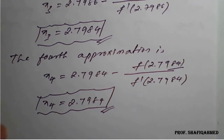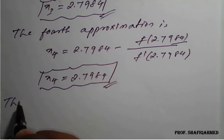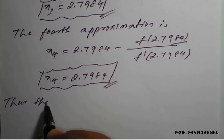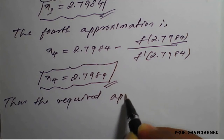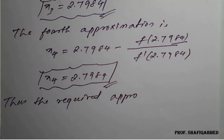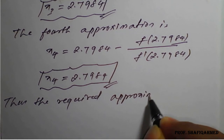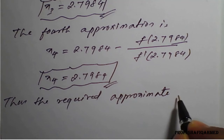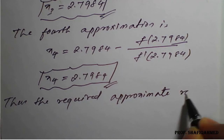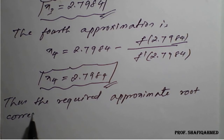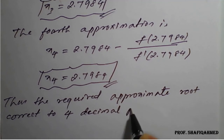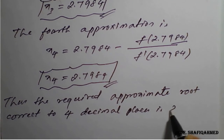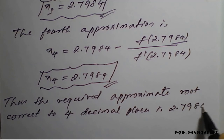So x3 approximation and x4 approximation both are the same — you can see here both approximations are same. Thus, the required approximate root correct to four decimal places is 2.7984.